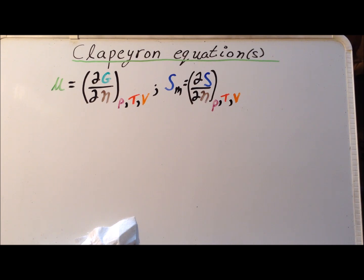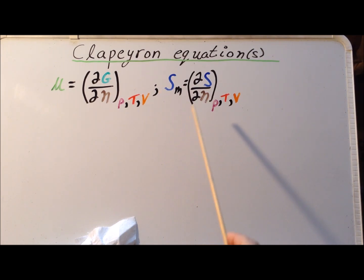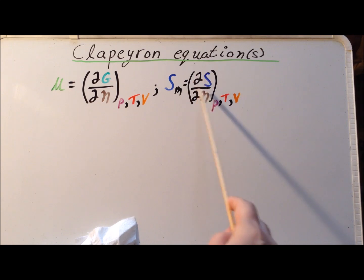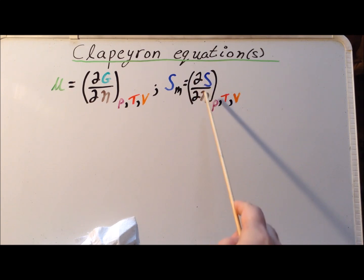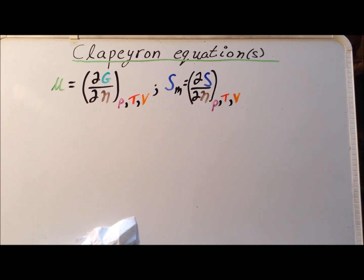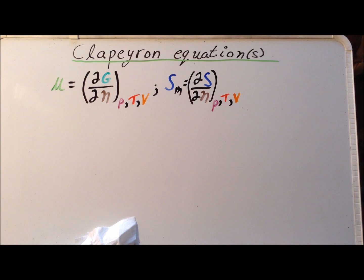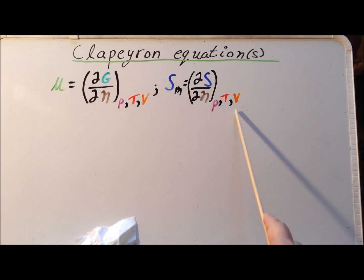We also define the partial molar entropy, which is the derivative of the entropy S with respect to N, where N is the number of moles of some material, again at constant pressure, temperature, and volume.